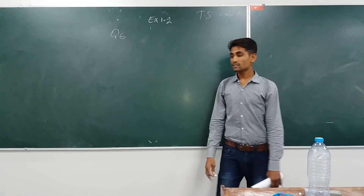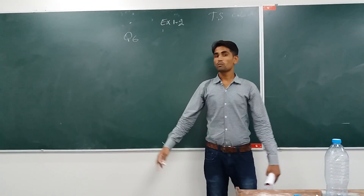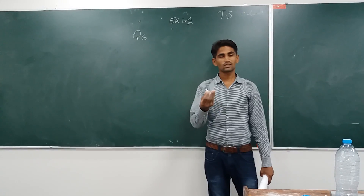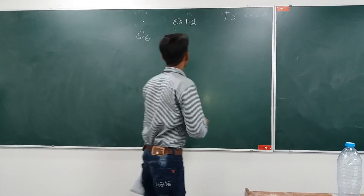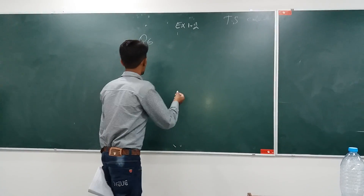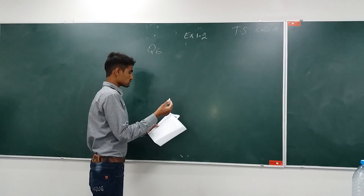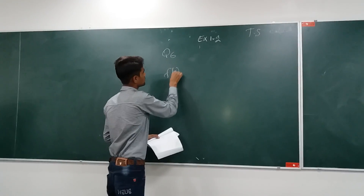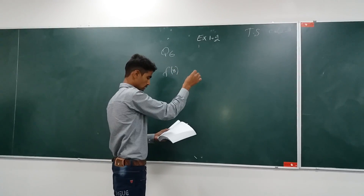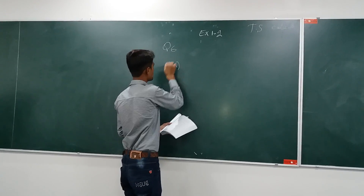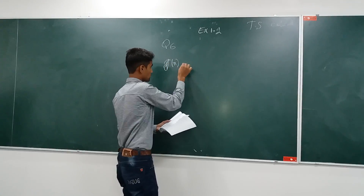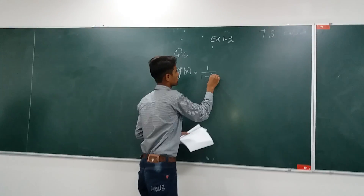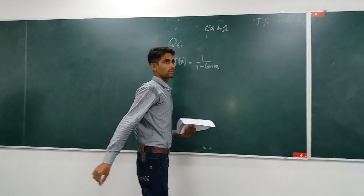I think you are thinking that the problem will be very frightening, but not at all — it is quite easy. The problem is that g of x is equal to 1 upon 1 minus tan x.